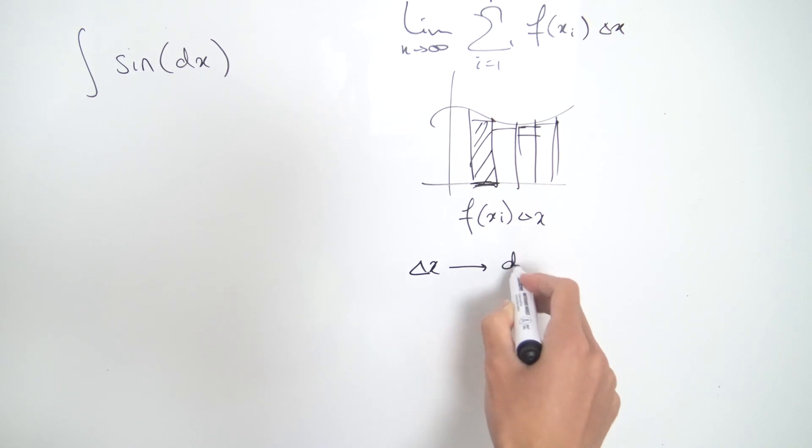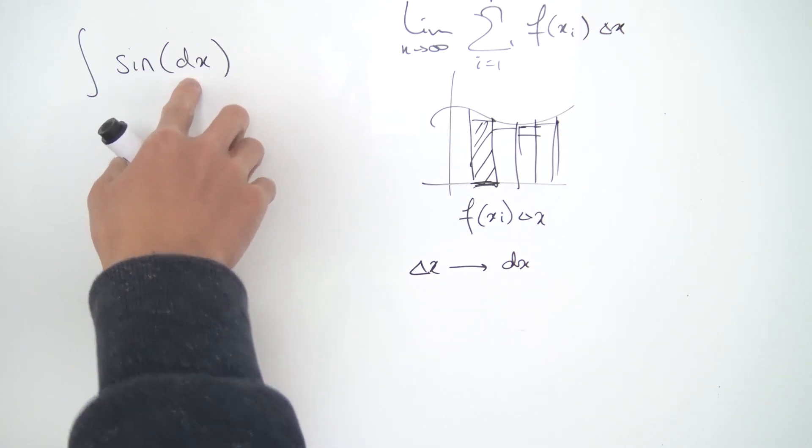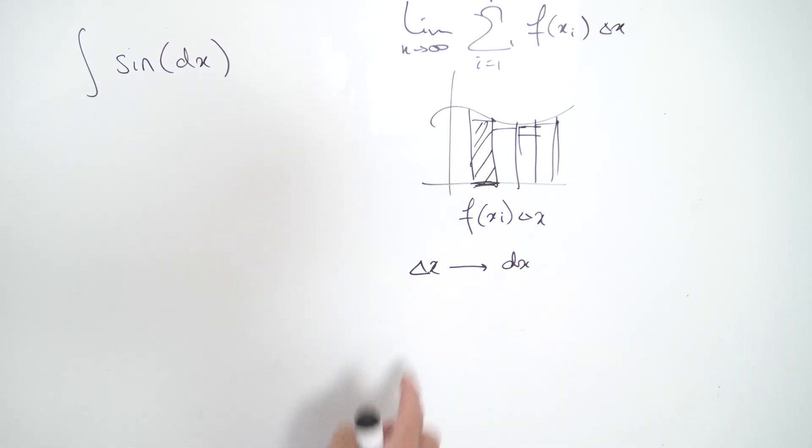So our delta x will become our dx's, so we have infinitesimals as we increase the number of rectangles. You can think about our dx's as just simply a limit as our delta x's approach zero, as the width of each of these rectangles approaches zero.